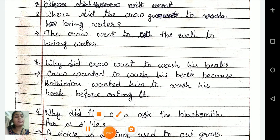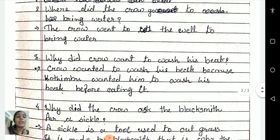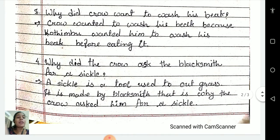Third one: why did the crow want to wash its beak? The crow wanted to wash his beak because kotimbu wanted him to wash his beak before eating it. Fourth one: why did the crow ask the blacksmith for a sickle? A sickle is a tool used to cut grass; it is made by the blacksmith, that is why the crow asked him for a sickle.